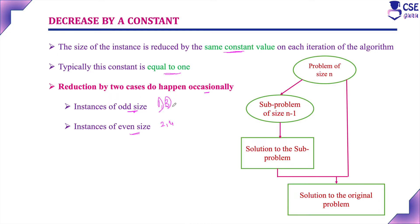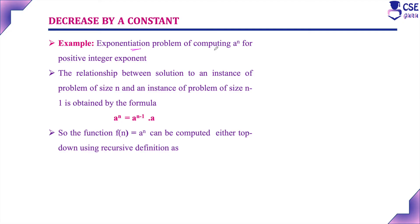When choosing the constant value, it is applied throughout the process of finding the solution. Initially, a problem of size n is given; we reduce the size by a constant value to get a sub-problem of size n minus 1. We find the solution for this smaller instance, then apply it to the other sub-problems to finally get the solution for the original problem. For example, consider the exponentiation problem of computing a^n for positive integer exponent. Here, each iteration reduces the problem size by 1, from n to n minus 1.